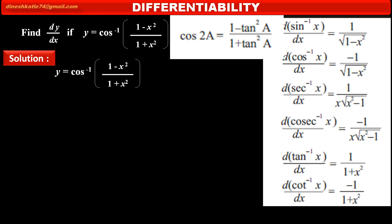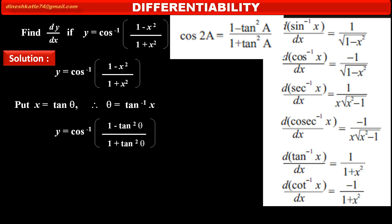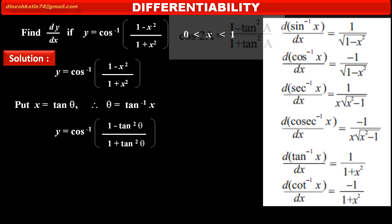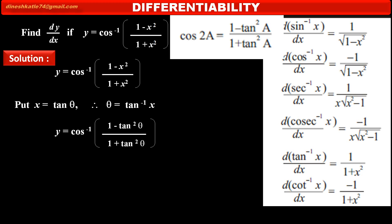We put x equal to tan theta in the given function. Therefore, we can write theta is equal to tan inverse x. So we can write y equal to cos inverse of (1 minus tan square theta) upon (1 plus tan square theta), replacing x by tan theta. According to the formula for cos 2a, we can write y equal to cos inverse of cos 2 theta.